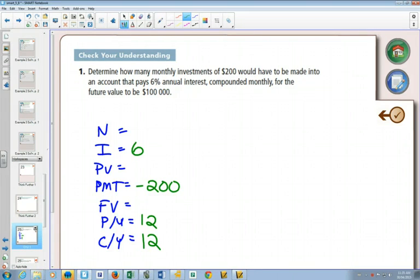We want the future value to be $100,000. And that would be the bank giving it back to you, so that would be positive.